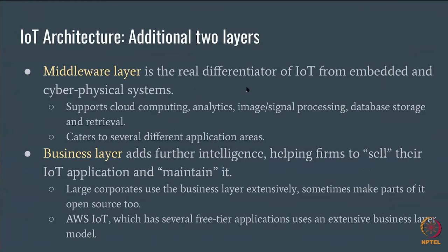The middleware layer is the real differentiator of IoT from embedded and cyber-physical systems. It supports cloud computing and analytics. When you do things the true internet way, a cyber-physical system becomes an IoT system. IoT caters to several different application areas like smart homes. The business layer adds further intelligence, helping firms to sell and maintain their IoT product. Large corporate companies like Amazon use the business layer extensively, and AWS IoT has several free-tier applications.